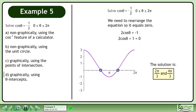The solution is 2 pi over 3 and 4 pi over 3. This is the same result we obtained in Parts A, B, and C.